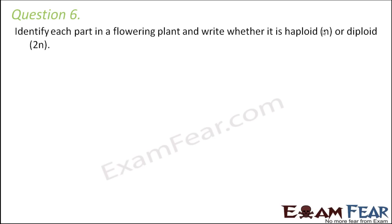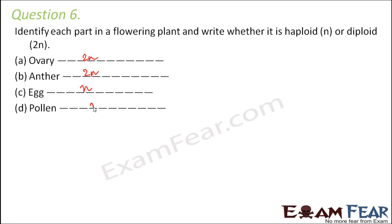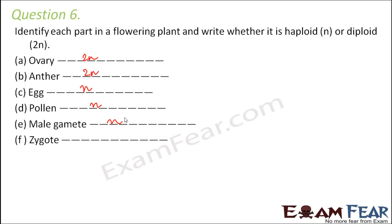Question number six: identify each part in a flowering plant and write whether it is haploid or diploid. The ovary is diploid; the anther is diploid. The egg is the female gamete so it is haploid. Pollen is like the male gamete so it is also haploid. The zygote is diploid because the male and female gametes fuse together to form the diploid zygote.